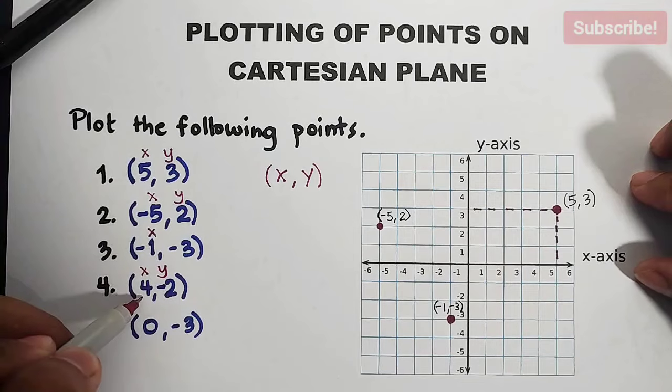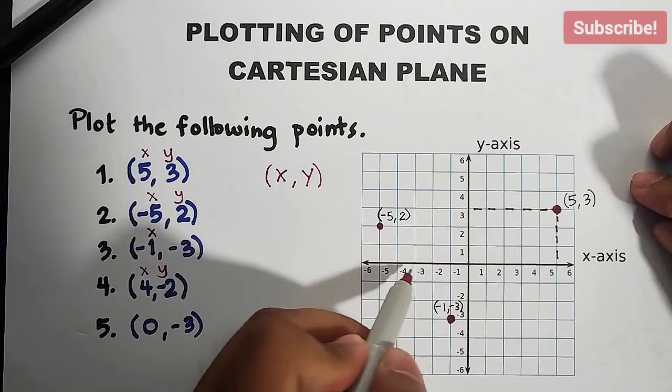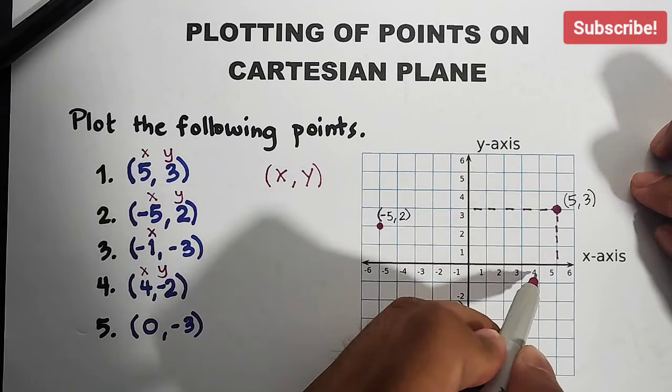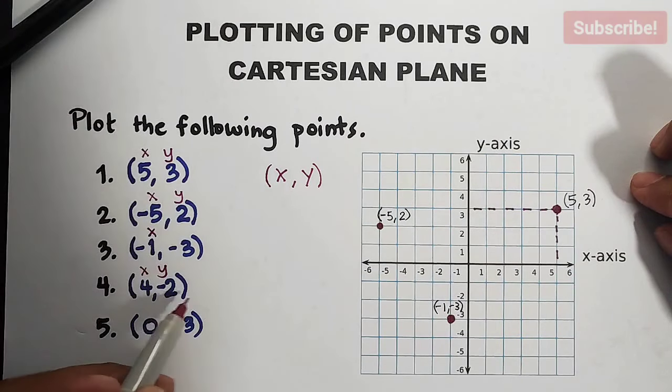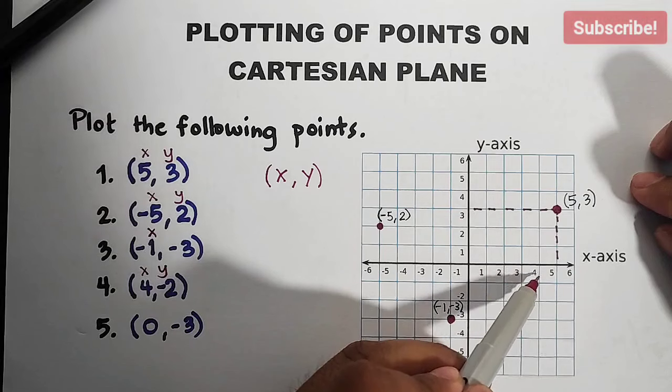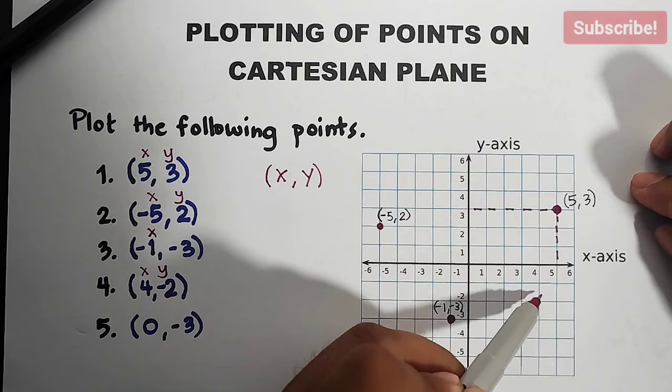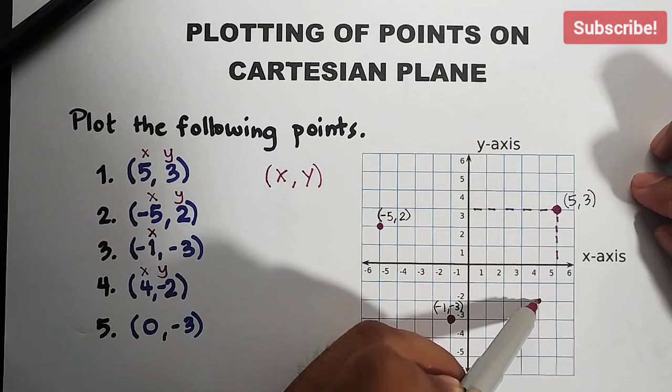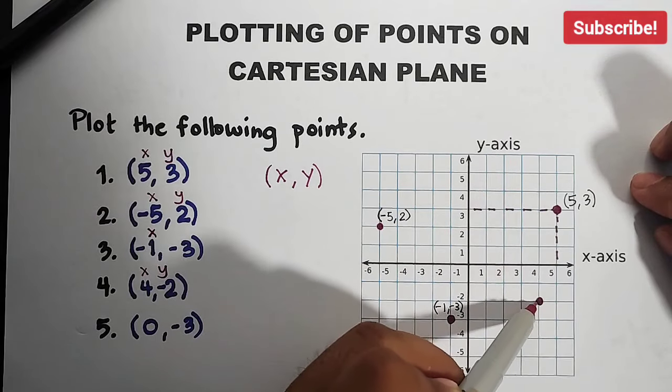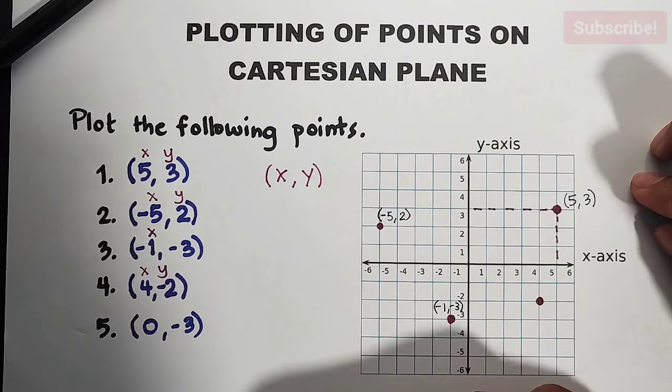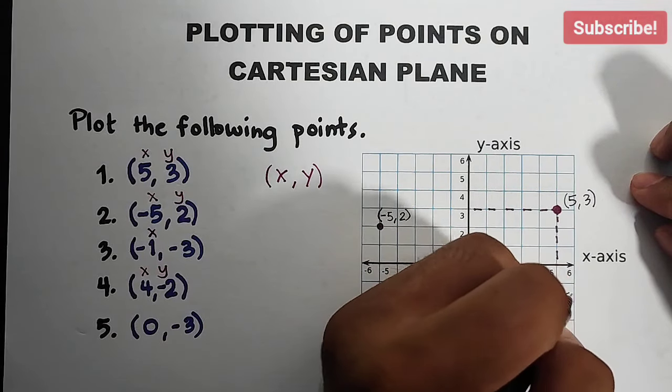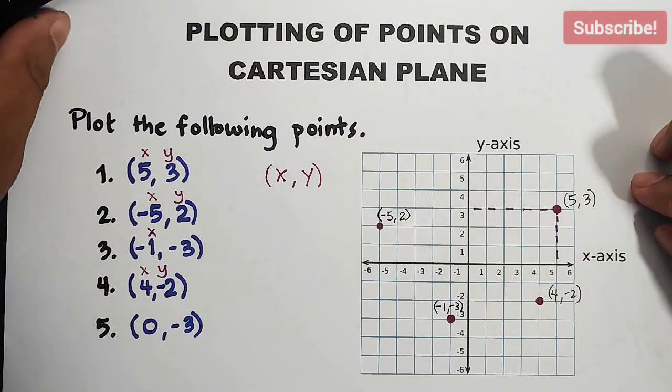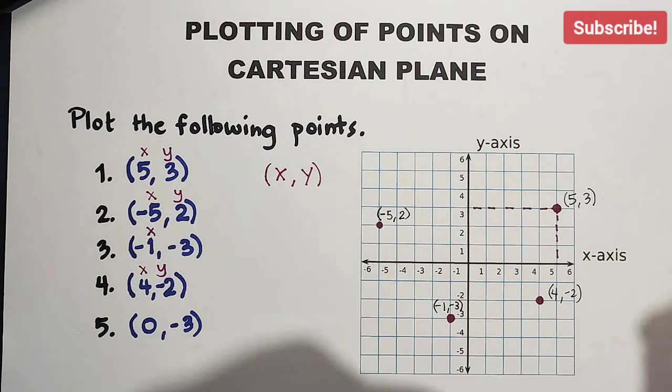So here, what we'll do is locate first the 4 on the x-axis. It's here on the right side because it's positive. You have your 4. And then, since your y is negative 2, from here we will go down 2 units. 1 and 2. So this is the location of (4, -2). Okay guys? I hope with the first 4 examples, you got the concept.